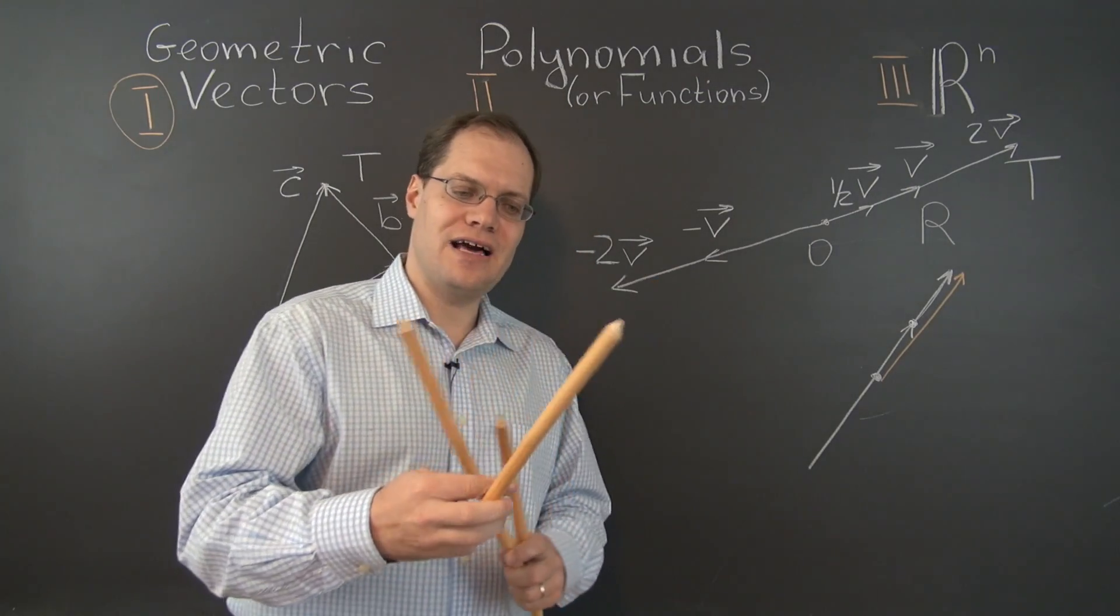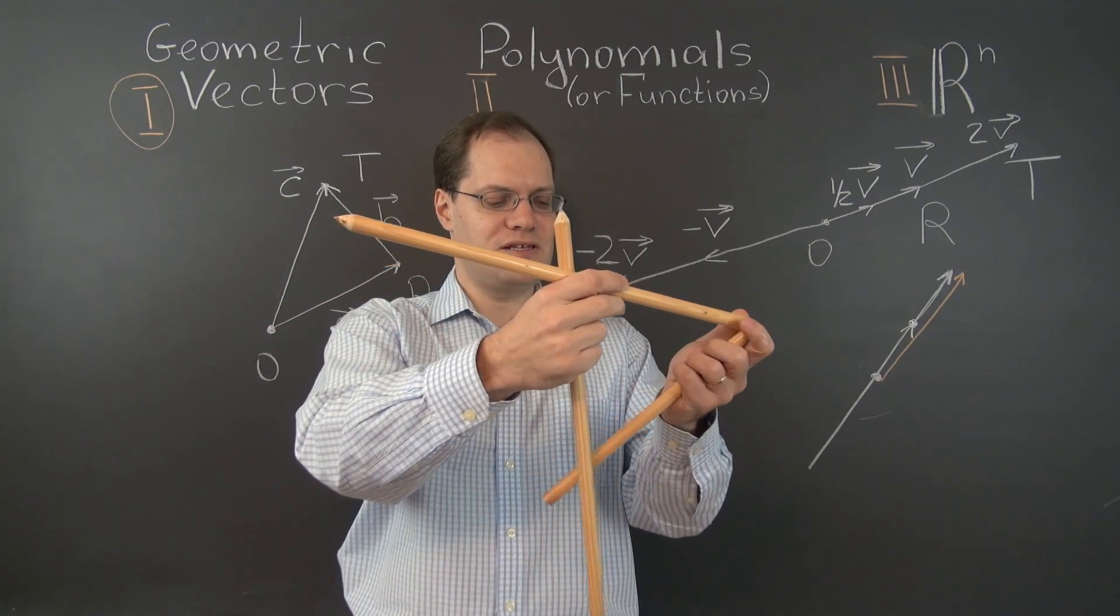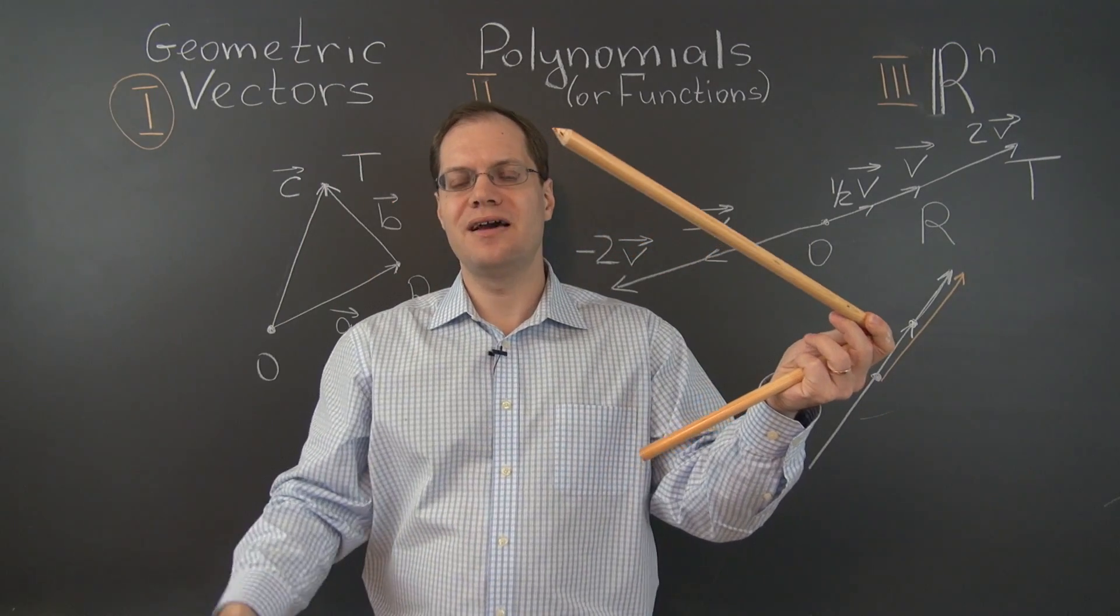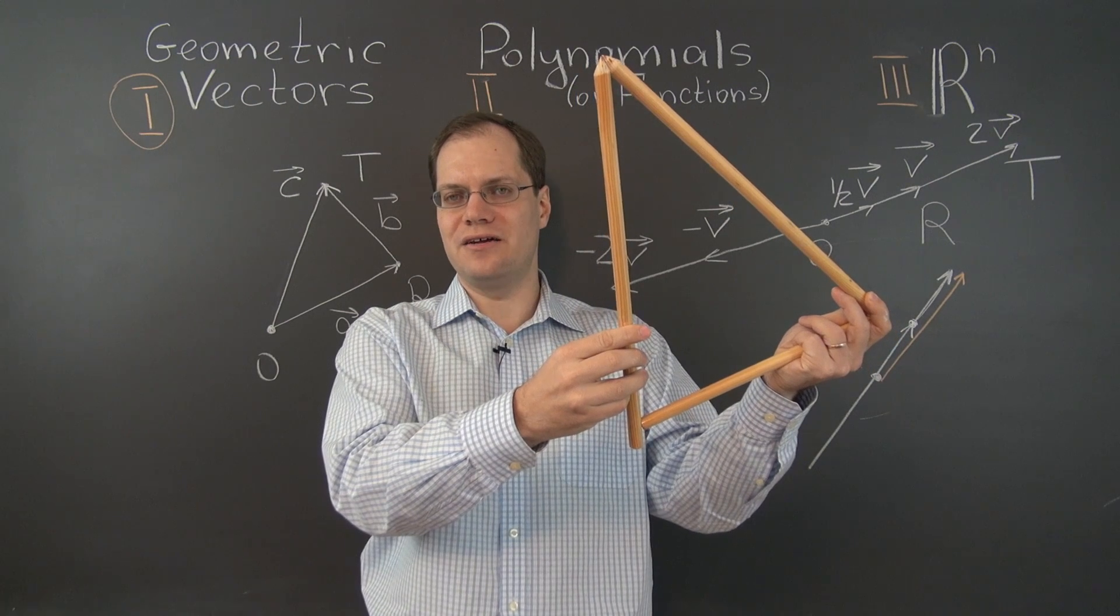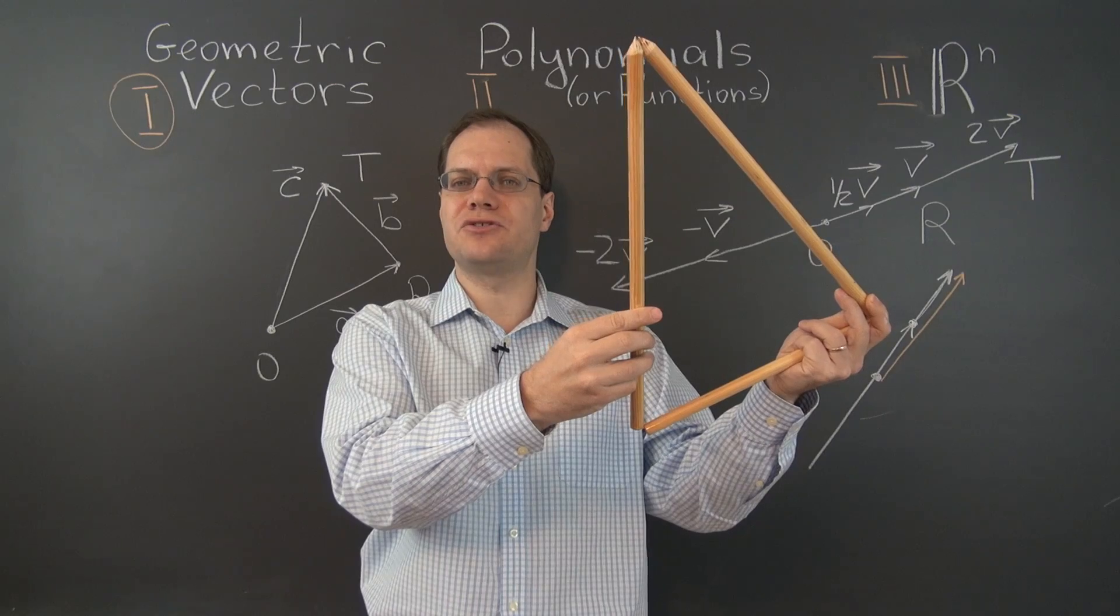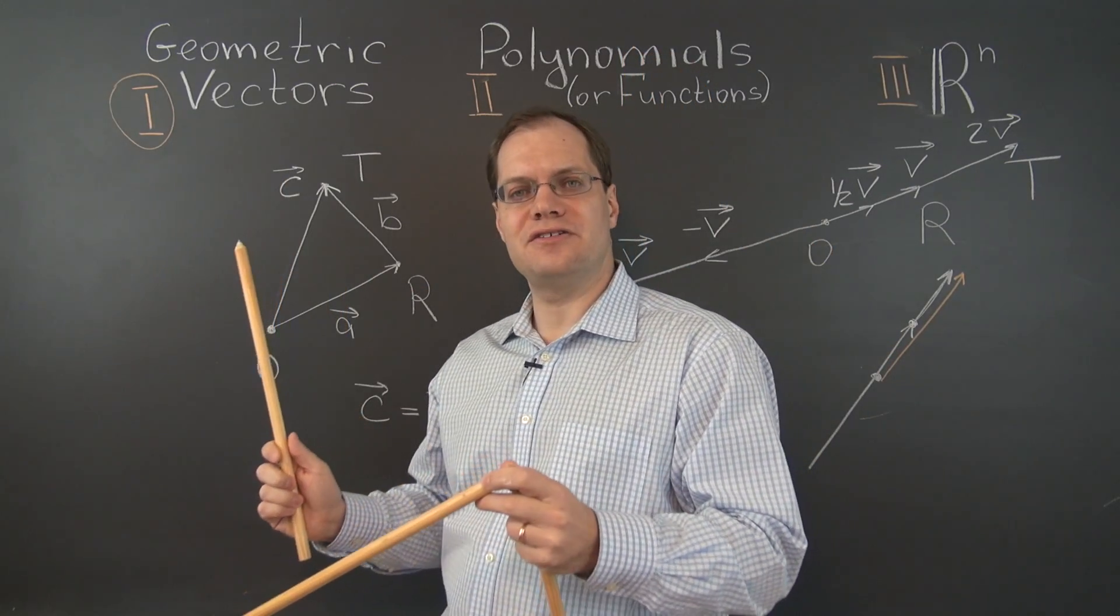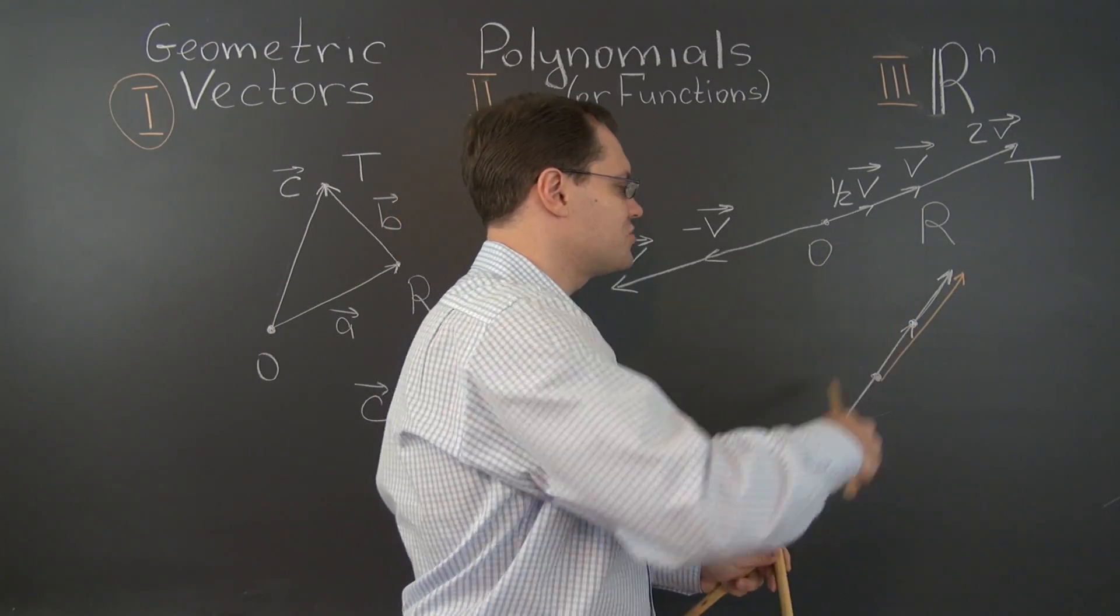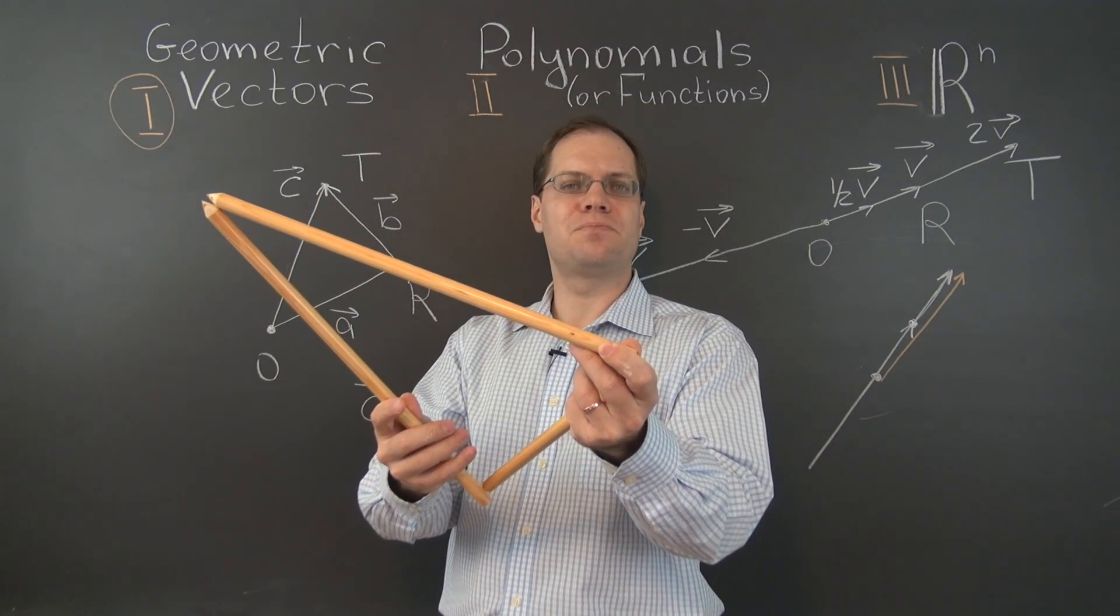And if the fly first flew from this point to this point, and then from this point to this point, then the net effect of its travels can be captured by this vector right here. And once again, this definition is completely geometric, and 100% analogous to this definition. So we can work with geometric vectors on the plane, along a straight line, and in three dimensions, and it works perfectly.